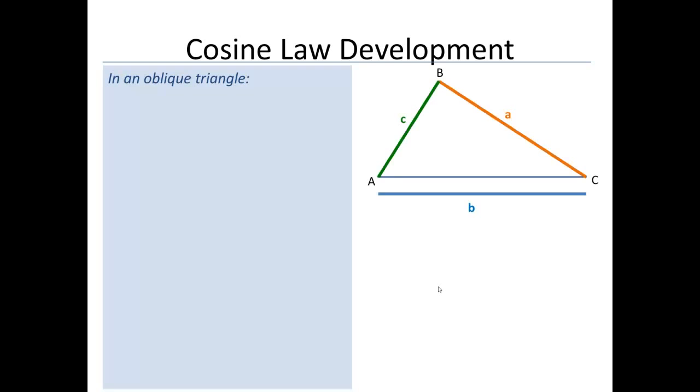Now we're going to look at how the cosine law has developed. Again, we have an oblique triangle, and the first thing we're going to do is recognize that this side here, since it's opposite angle B, we just call it side B.